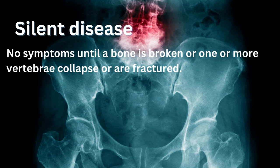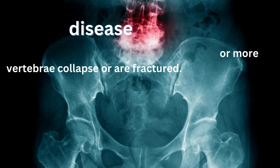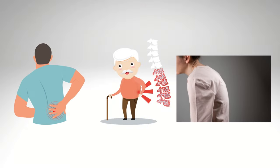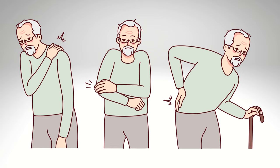There are typically no symptoms until a bone is broken or one or more vertebrae collapse or are fractured. Symptoms of a vertebral fracture may include severe back pain, loss of height, or spine malformations such as a stooped or hunched posture. Basically, many people only know they are affected once the damage is done.